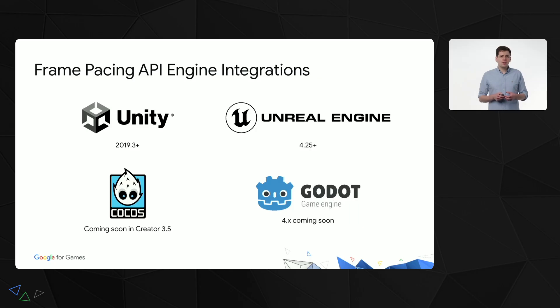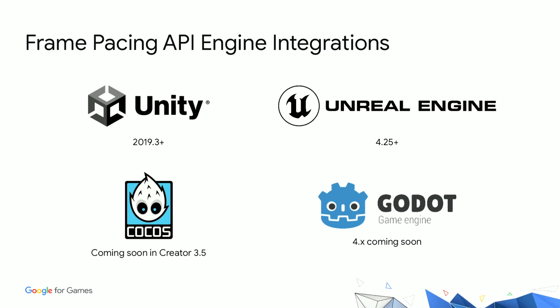We've also seen a large number of emerging and popular game engines start adopting our libraries. To take one example, let's talk about the frame-pacing API — a library to help game engines ensure frame stability and lower touch latency, in some cases by as much as 10%. This is now available as part of Unity from 2019.3, Unreal 4.25 onwards, Cocos Creator launching it in 3.5, and it's coming soon to Godot. Having these libraries built into the engine makes it even easier for you to use our new technologies, as you don't have to do the integration work yourself.